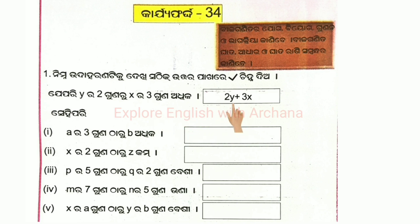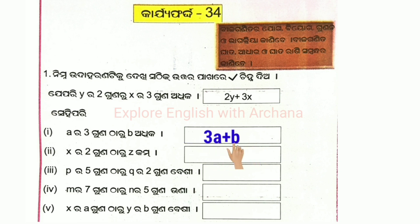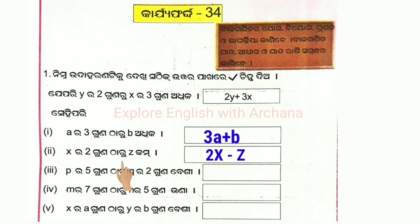2y plus 3x. For a³ × b, we can write a³ as 3a. So 3a plus b. For x² × z, since minus means less and plus means more, x² gives us 2x, so 2x minus z.